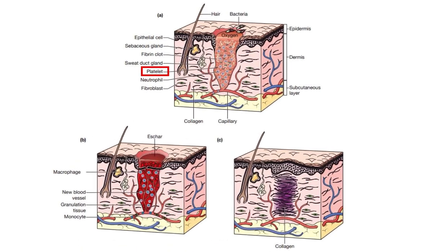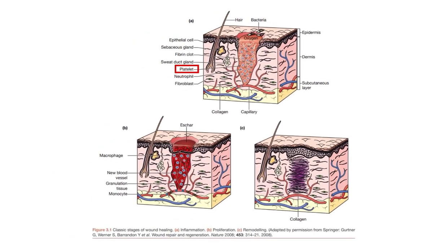Looking at the figure: Figure A shows the inflammatory phase — there is a wound and the platelet plays a major role here. In the second phase, the proliferation phase, there is macrophage, monocyte, granulation tissue, and new blood vessel formation. Finally, in the remodeling phase, there is formation of extracellular matrix, collagen, other tissue, and finally the mature escar.